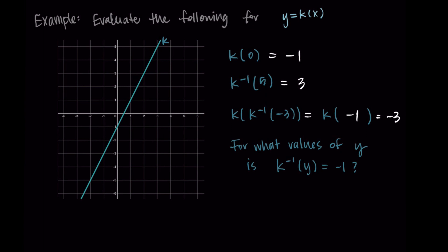Lastly, for what values of y is k inverse(y) = −1: k inverse takes in a y value and gives an x value, so negative 1 is an x value. Finding negative 1 as an x, it corresponds to y = −3. So k inverse(−3) = −1, and negative 3 is our answer.